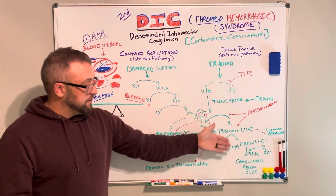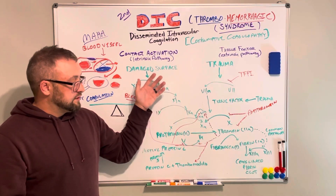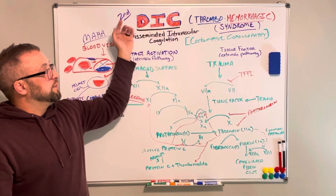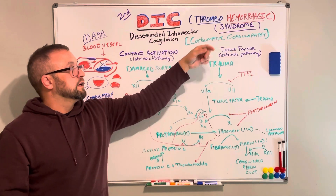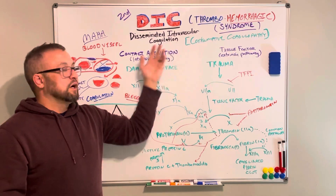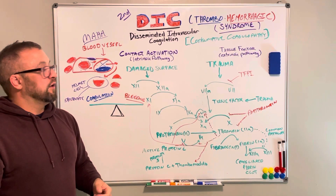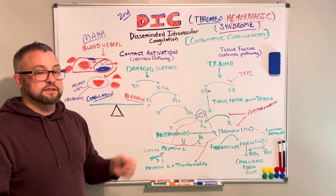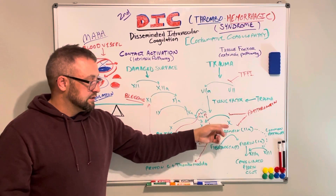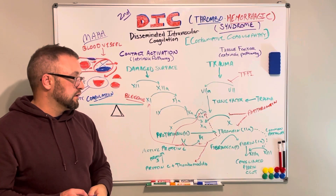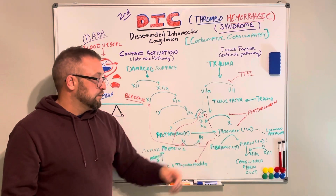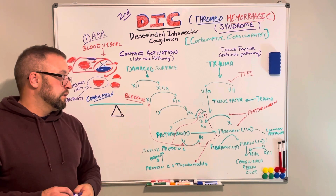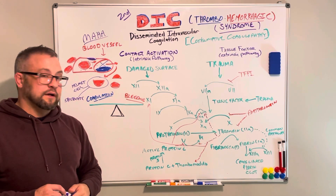Heparin was previously used because stopping thrombin could theoretically stop clot formation and halt the consumptive process before hemorrhagic syndrome developed. However, by the time most providers are managing DIC, patients are already too far into the process, and heparin can cause more harm than good. Currently, the goal is to keep fibrinogen levels above 150, and in pregnant patients, above 200.